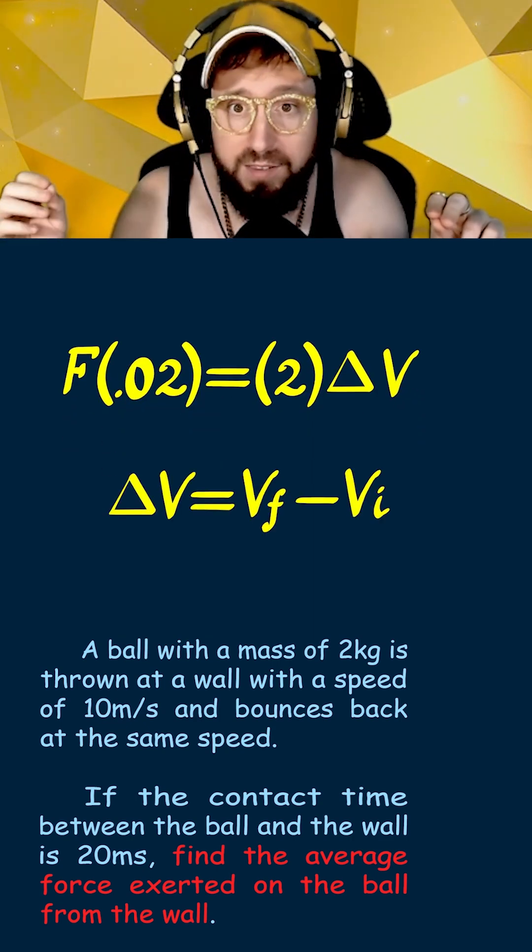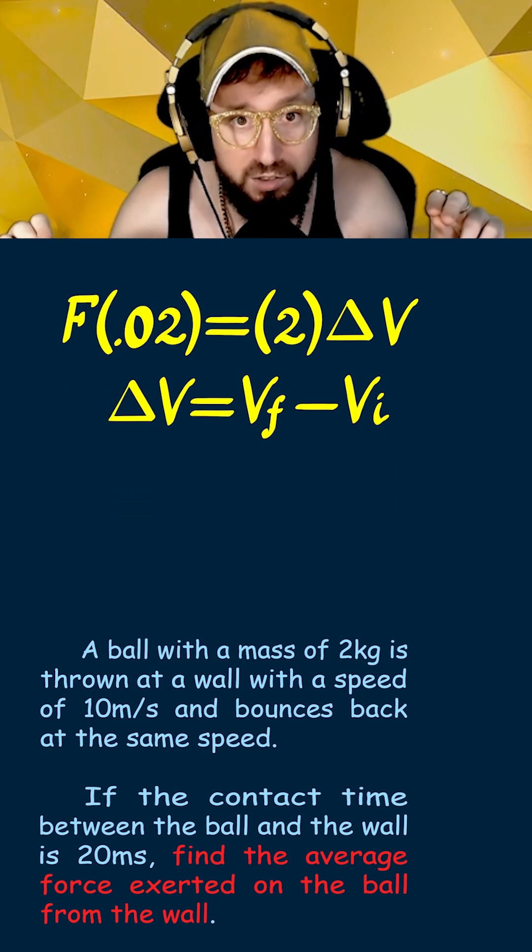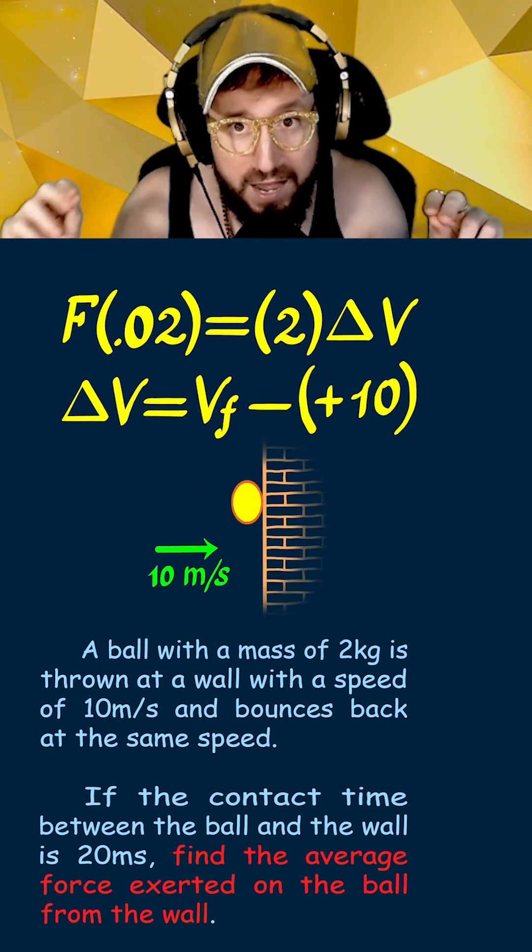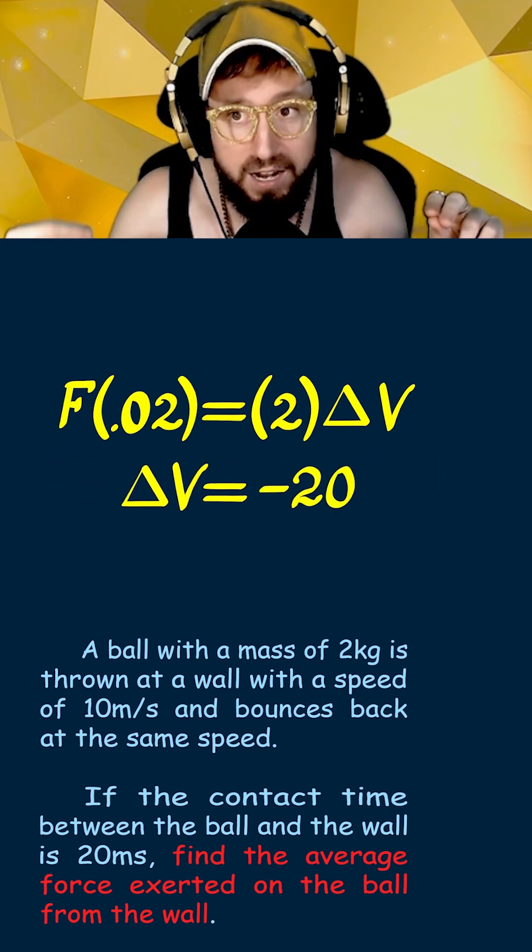However, when determining delta v, we need to be careful and remember that since the velocity goes from a positive 10 to a negative 10 meters per second, the total change in velocity is actually negative 20.